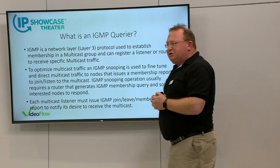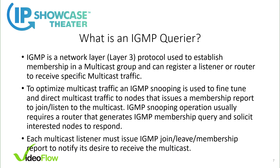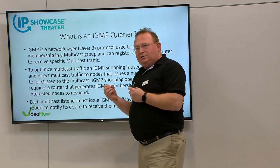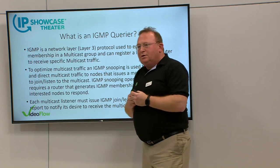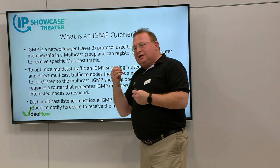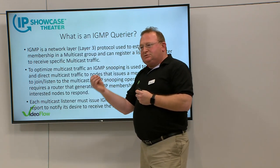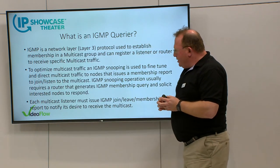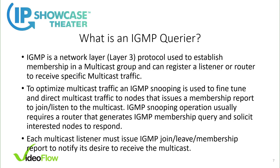IGMP is a network layer, layer-3 protocol used to establish membership in a multicast group and can register listeners to a router or switch to receive specific multicast traffic. To optimize multicast traffic, IGMP snooping is used. IGMP snooping tells the network element to check what multicast is traveling on its network, listen to requests, store that information, and only propagate a multicast stream if somebody truly requests it. That saves a lot of bandwidth inside an operation center, head end, and so on.